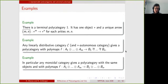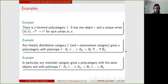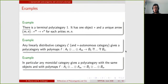Given a linearly distributive category as introduced by Cockett and Seely, or if you prefer a star-autonomous category, you can define a polycategory where the polymaps go from the tensor product of the inputs into the par of the outputs. In particular, any monoidal category can be considered as a linearly distributive category where tensor and par coincide. For star-autonomous categories this gives the notion of compact closed polycategory, where polymaps are given by maps going from the tensor product of the inputs into the tensor product of the outputs.